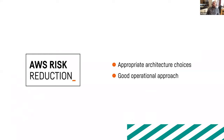In the AWS and cloud landscape there are two main ways to reduce risk and increase our ability to cope with uncertainty: making good architectural choices and design decisions early on, and having a good operational approach — putting time and effort into being ready to deal with things that might happen in an uncertain world.